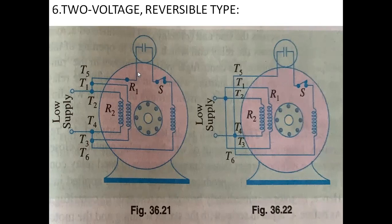The first figure is for clockwise rotation and the second one is for anti-clockwise rotation. In both cases, if you observe that the motor is operated on low voltage. Similarly, a wiring diagram can also be drawn for higher voltage supply.